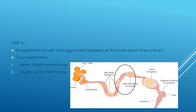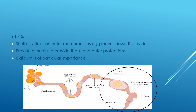Finally, a shell develops around the outer membrane as the egg moves through the region of the oviduct that secretes minerals, to provide strong outer protection for the egg. Calcium is the mineral of particular importance in the shell.